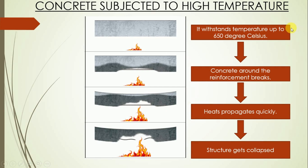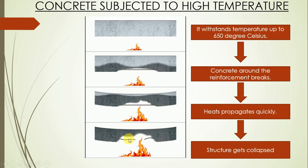The second physical cause is concrete subjected to high temperature. Concrete can withstand temperatures of about 60 degrees Celsius; however, if the temperature is further increased, the concrete around the reinforcement breaks. If the heat is allowed to propagate further, the reinforcement bars get deteriorated due to high temperature, and hence the deterioration of concrete takes place.